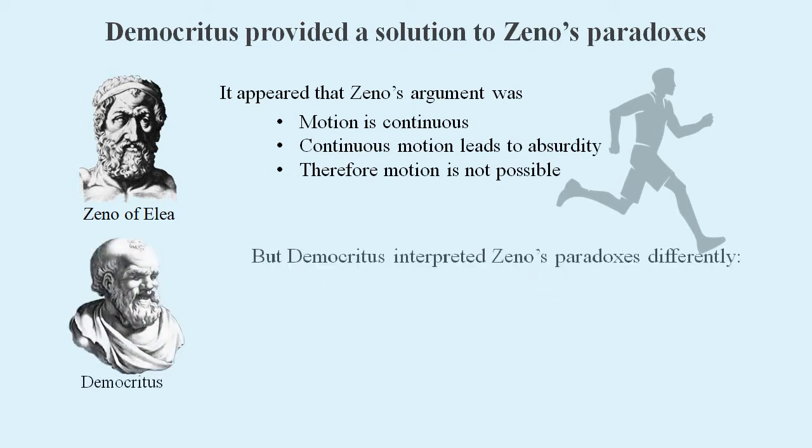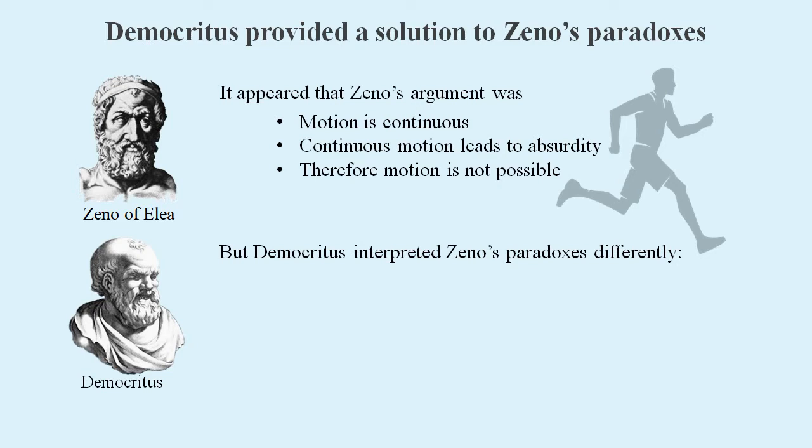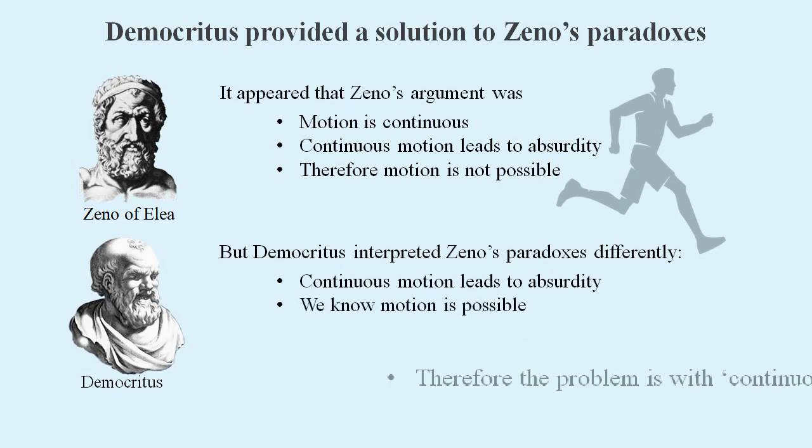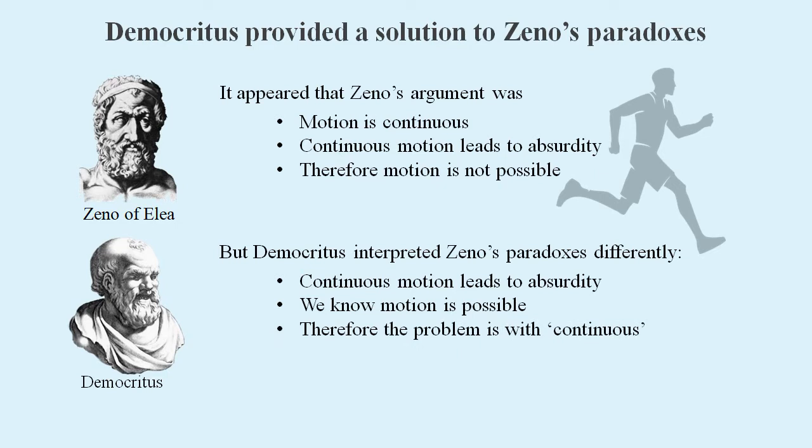But another Greek philosopher, Democritus, interpreted Zeno's paradoxes as follows: Continuous motion leads to absurdity. We know motion is possible. Therefore, the problem is with continuous.